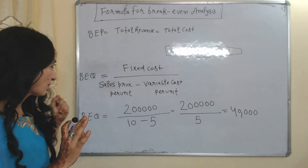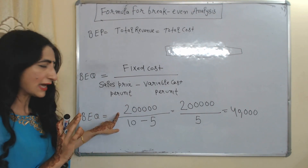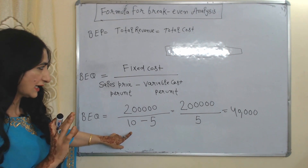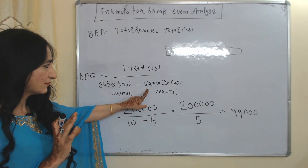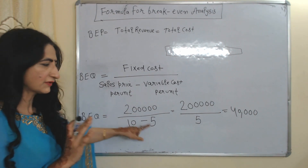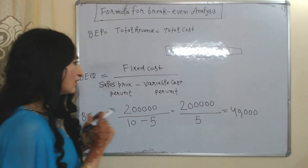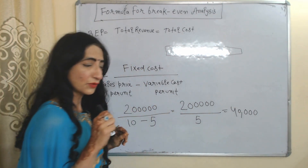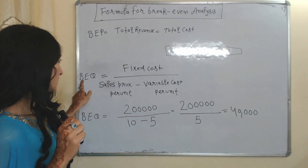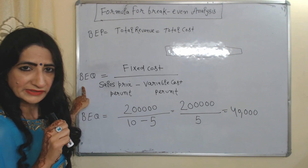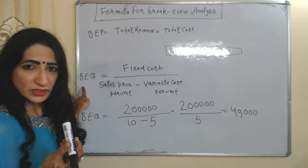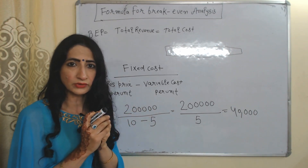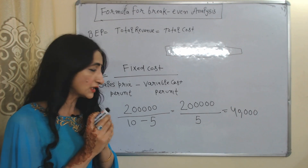Suppose fixed cost is 2 lakh, sales price per unit is 10, and variable cost per unit is 5. When we solve this equation, our answer will be 40,000. This 40,000 will be called breakeven quantities — meaning in order to reach the point where total revenue equals total cost, we need to sell 40,000 units.